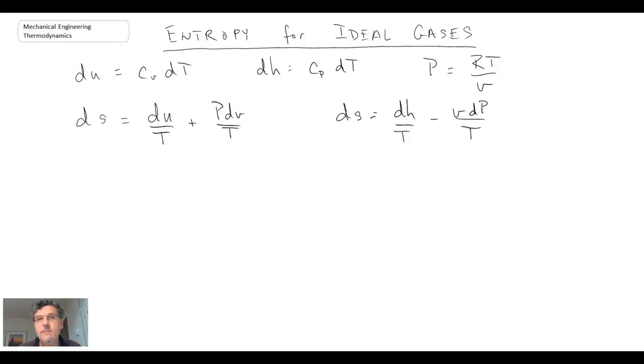So what we're going to do, we'll work with Gibbs' first and second equation. We'll make the substitutions for both internal energy, enthalpy, as well as we'll use the ideal gas equation. So let me start with the equation on the left. So I make a substitution for the internal energy term. And then for the second term in this equation, what I'll do is I'll make a substitution for the pressure using the ideal gas relation.